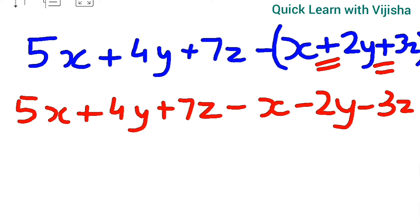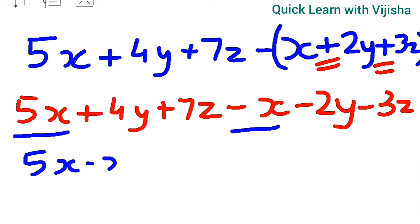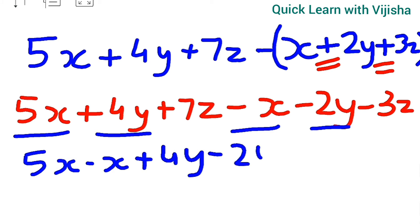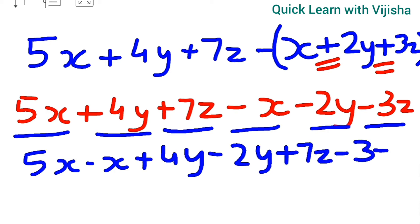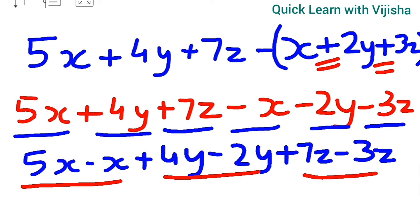Writing variables together: 5x and minus x, plus 4y minus 2y, and plus 7z minus 3z. Solving: 5 minus 1 — since x alone means coefficient 1 — gives 4x. Plus 4 minus 2 gives plus 2y. Plus 7 minus 3 gives plus 4z. So the answer is 4x plus 2y plus 4z.